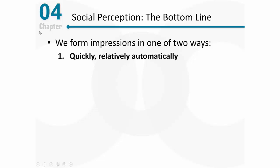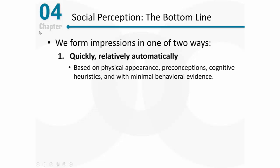One way is really quick and essentially automatic, and it's based on relatively superficial things sometimes, like physical appearance, preconceptions we have of people, cognitive heuristics — which are just rules of thumb — and it's almost always based on minimal behavioral evidence because it's quick and relatively automatic.